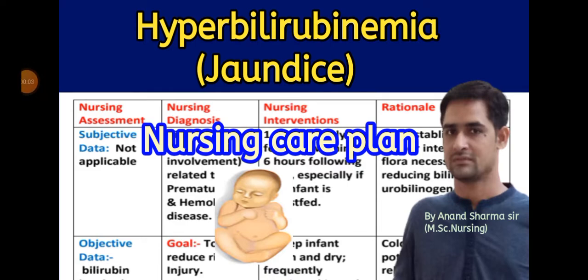Hello friends, welcome. Today in this video we'll learn about the nursing care plan on neonatal jaundice or hyperbilirubinemia. This is a very important nursing care plan for child health nursing or pediatric nursing. It is also useful for practical file purposes or examination purposes.